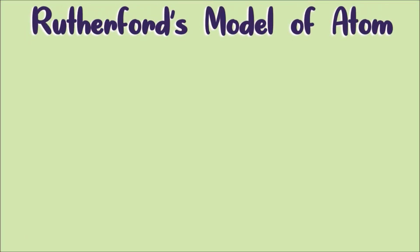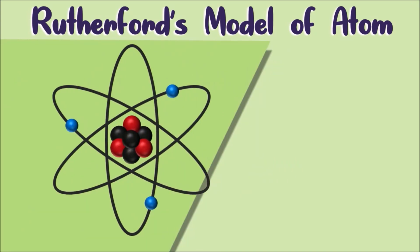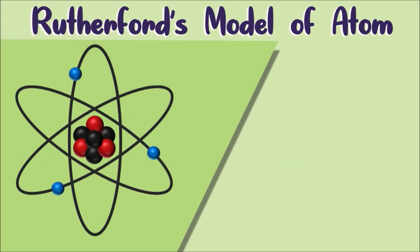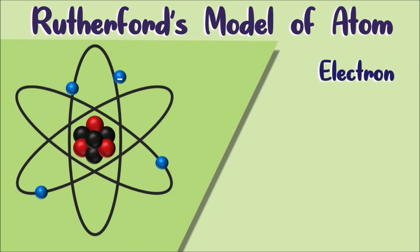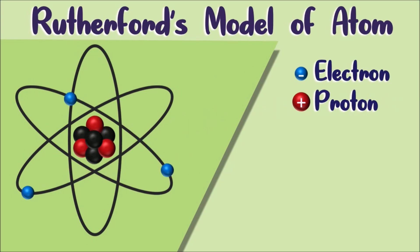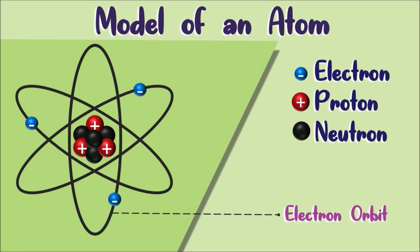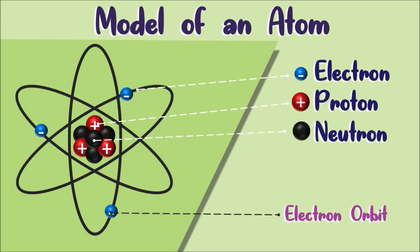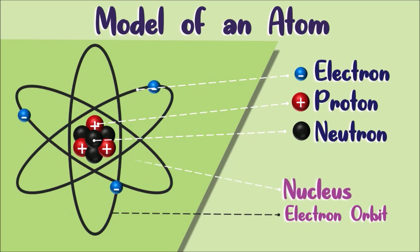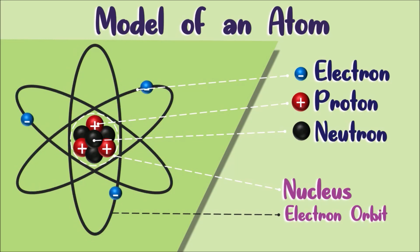This is the latest model of an atom. The atom is composed of smaller particles: electron, proton, and neutron. An electron is a negatively charged particle. A proton is a positively charged particle, while a neutron is a neutrally charged particle. The proton and neutron are found in the nucleus of an atom, while the electron travels in definite orbits around the nucleus. These orbits are at different levels or distances from the nucleus.